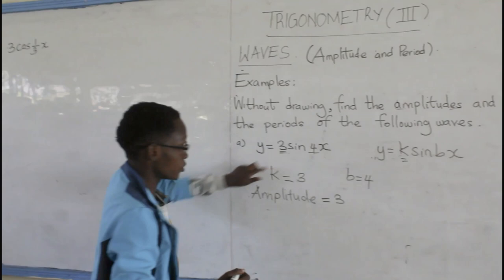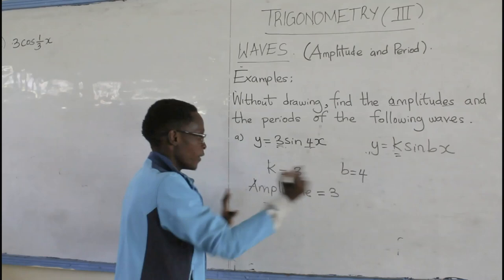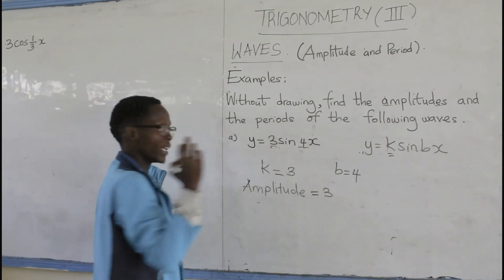But then, how do we find the period of the same wave? From the general equation, Y equals to K sine B x, we have that formula, I don't know if you can recall it.